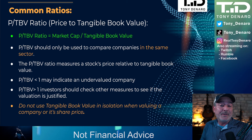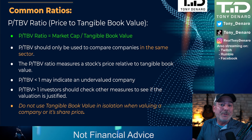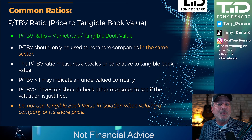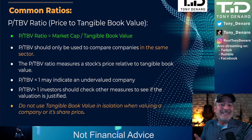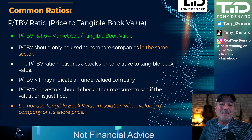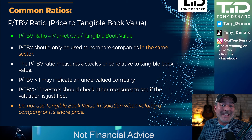We talked about how to calculate tangible book value and tangible book value per share. There is also a ratio: most commonly people look at price to book, but you can also calculate price to tangible book value. Market cap divided by tangible book value gives you your price-to-TBV ratio. If the price-to-TBV ratio is less than one, you might have an undervalued company. If it's greater than one, you'll want to look at other things like price to earnings, return on equity, and discounted cash flows.